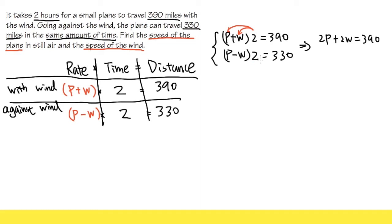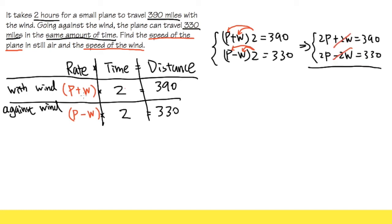Now, when we add these two equations, the +2W and −2W cancel each other out. We end up with 2P + 2P, which is 4P, equal to 390 + 330, which is 720. We divide both sides by 4 to get P = 720 ÷ 4 = 180. So the speed of the airplane is 180.